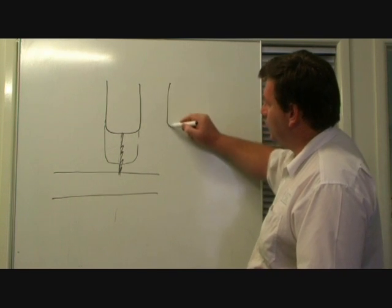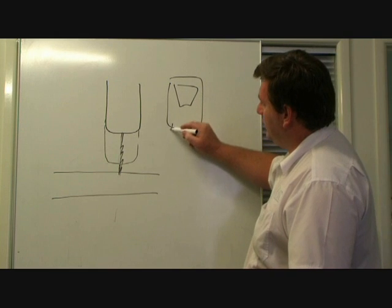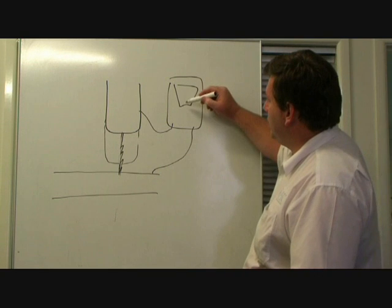Essentially, if you were to put a voltmeter between the electrode and the job, you get a voltage.